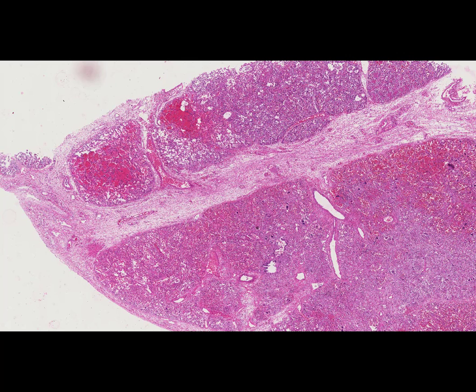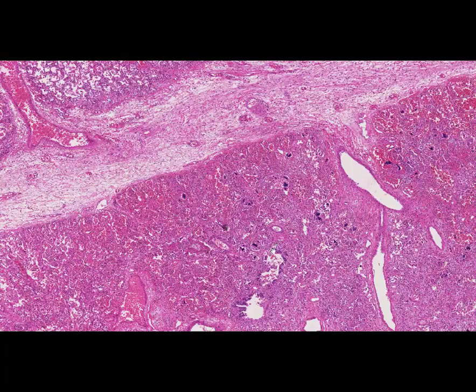Mild, moderate, and severe forms are distinguished. Here on this slide it is a severe form of parainfluenza infection, when the lung tissue lesion in the form of hemorrhagic pneumonia is found.